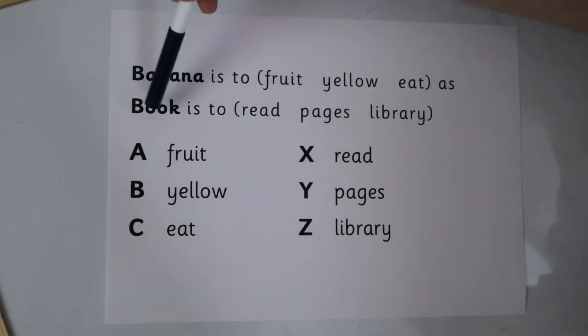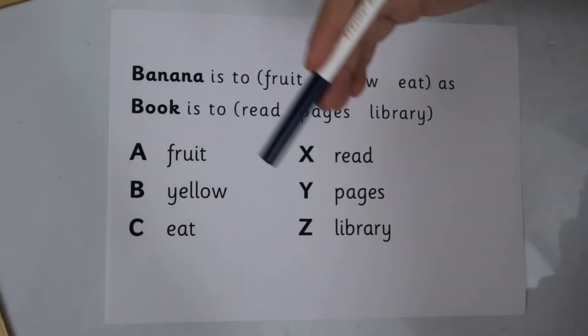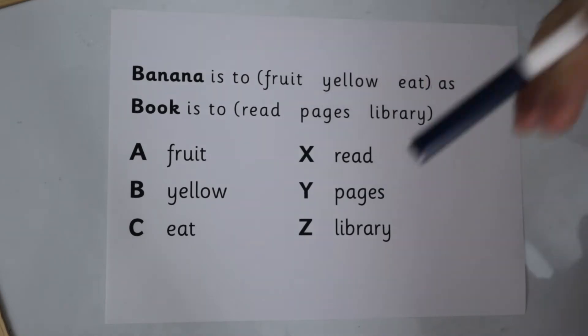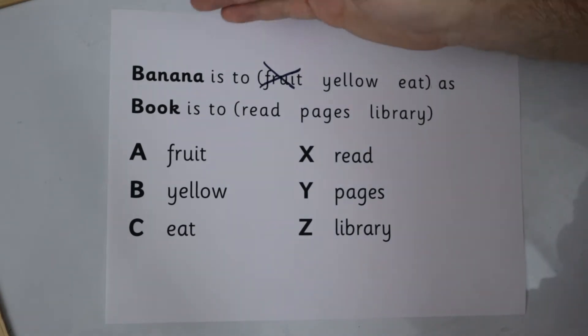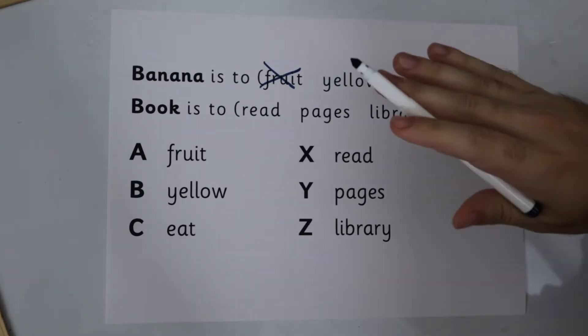So our job then is to go to the next word, book, and try and keep the same link. Book is a type of read, that doesn't work. Book is a type of pages, that doesn't work. Book is a type of library and that certainly doesn't work. So we know that banana is to fruit does not work with the other word book.